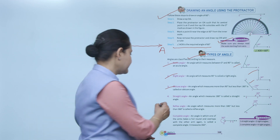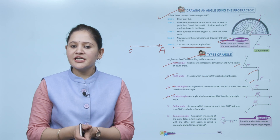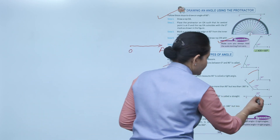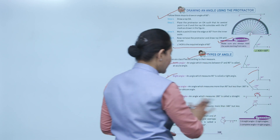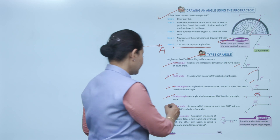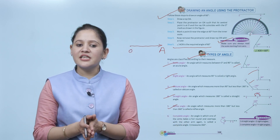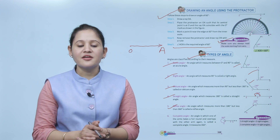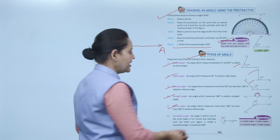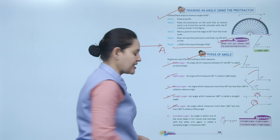A straight angle measures 180 degrees — so a straight line forms a straight angle. A reflex angle measures more than 180 degrees but less than 360 degrees — for example, 220 degrees is a reflex angle.